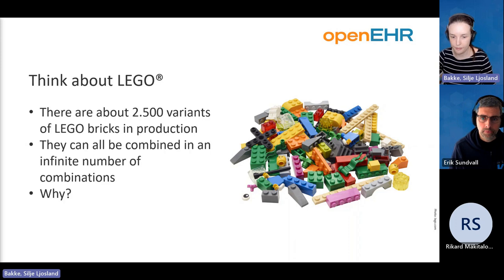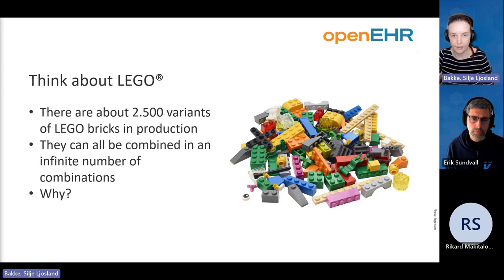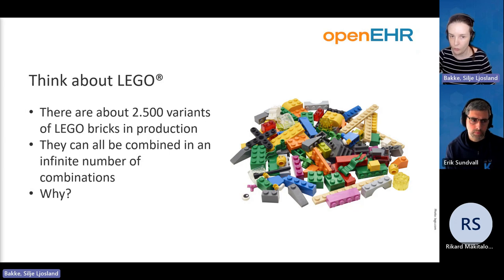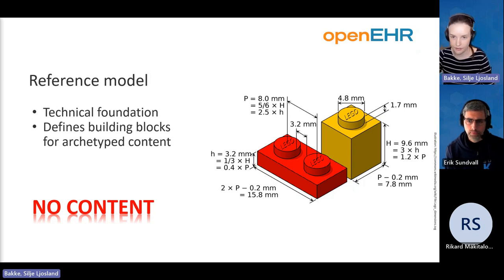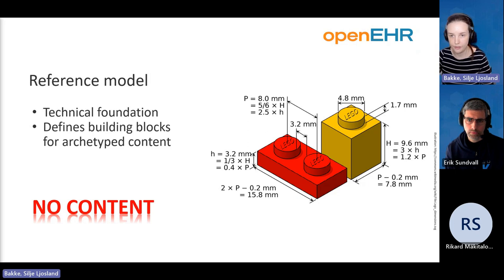One way of comparing OpenEHR to other things is to think about Lego. There are about 2,500 variants of Lego bricks in production today, and they can all be combined in an infinite number of combinations. The reason is that Lego has created very specific definitions of how a Lego brick should be constructed — the material, but also the measurements. All the little knobs on top have to be 4.8 millimeters wide and 1.7 millimeters tall, or else the bricks won't fit together.